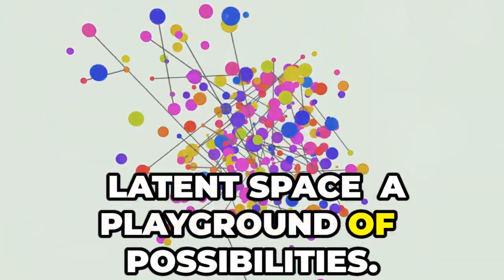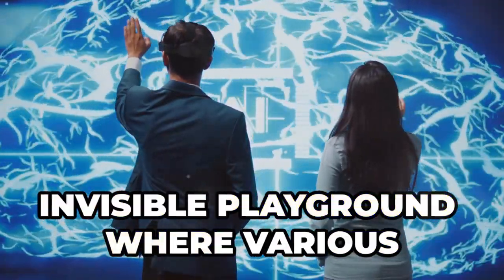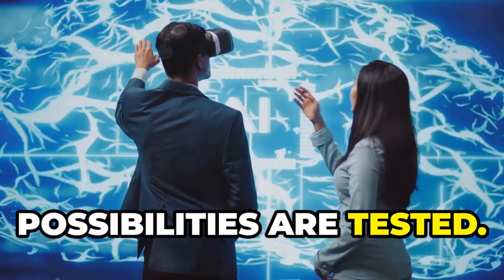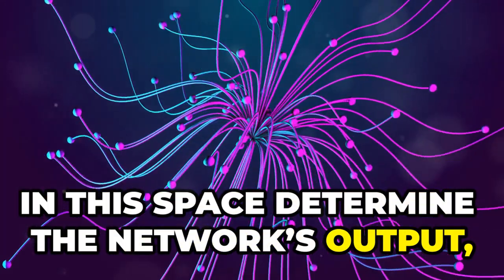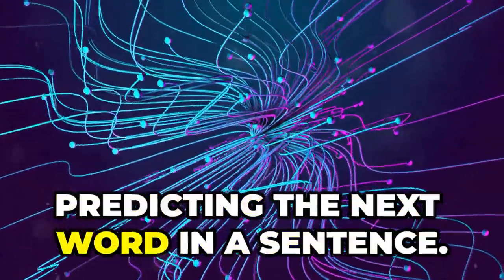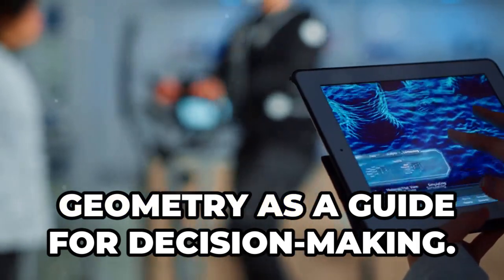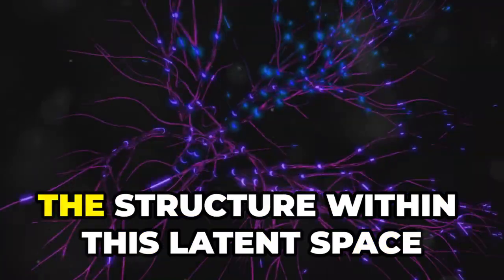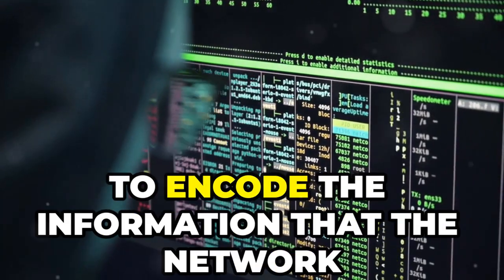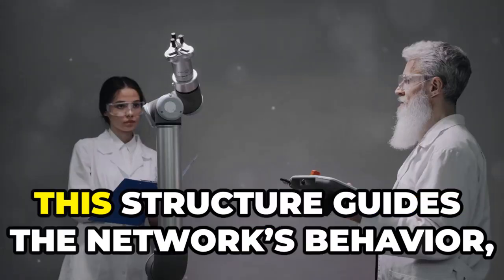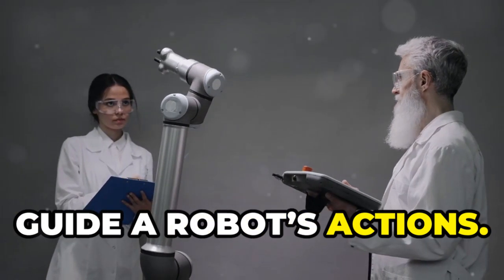Latent space: a playground of possibilities. Latent space can be thought of as an invisible playground where various possibilities are tested. The patterns formed by weights and biases in this space determine the network's output, such as recognizing an image or predicting the next word in a sentence. Geometry as a guide for decision-making. The structure within this latent space isn't random. It's meticulously organized to encode the information that the network has learned. This structure guides the network's behavior, much like a set of instructions might guide a robot's actions.